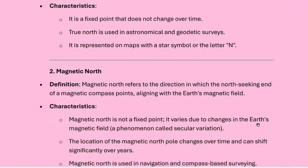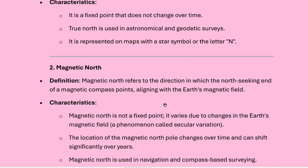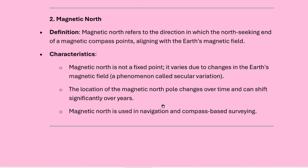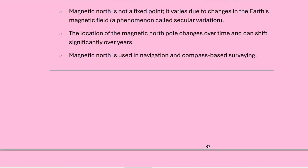What is magnetic north? Magnetic north refers to the direction in which the north-seeking end of a magnetic compass points, aligning with the earth's magnetic field. The characteristics of magnetic north: it is not a fixed point — it varies due to changes in the earth's magnetic field. This phenomenon is known as secular variation. The location of the magnetic north pole changes over time and can shift significantly over the years. Magnetic north is used in navigation and compass-based surveying.